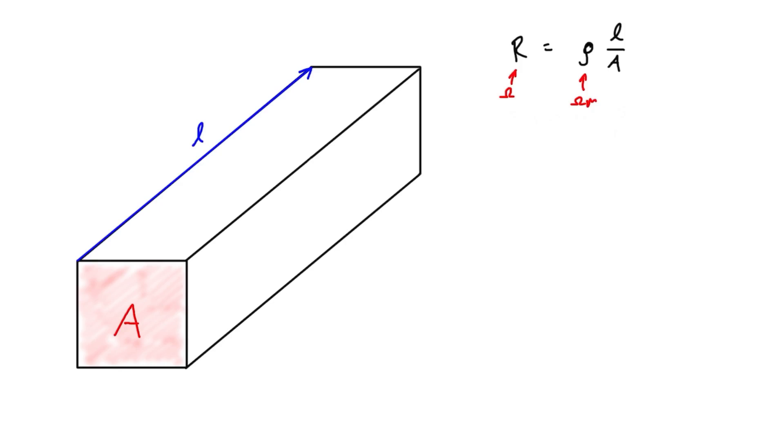Resistance is in ohms, resistivity was in ohm meters, length in meters, and cross-sectional area in meters squared.